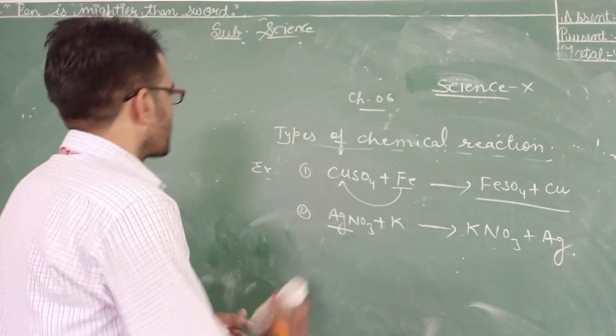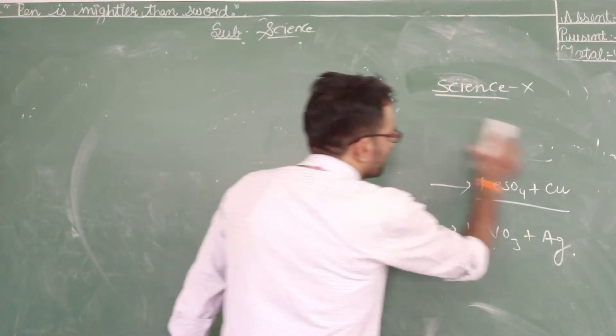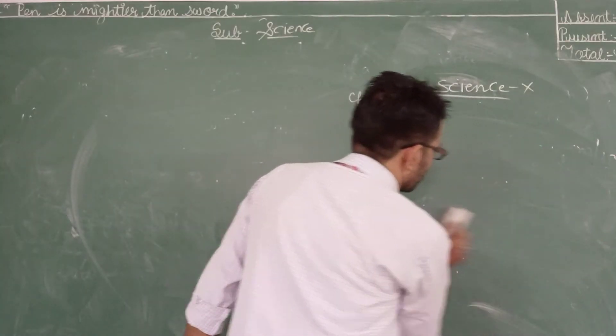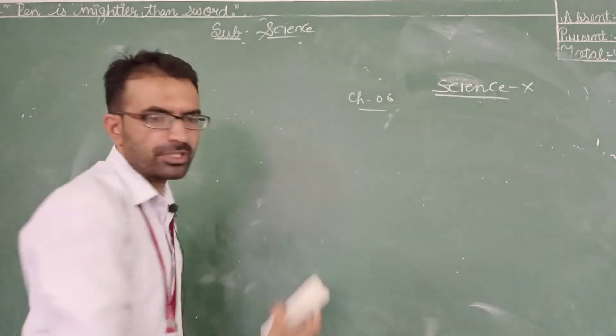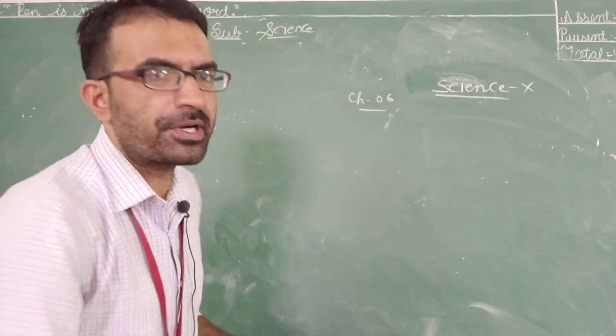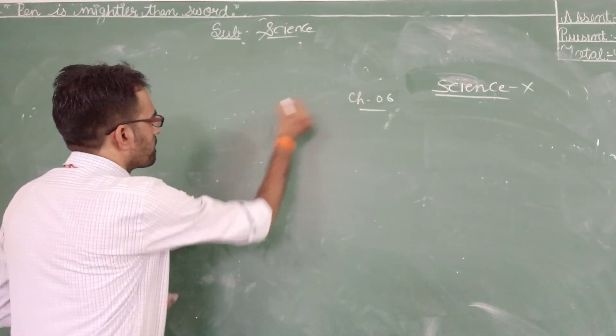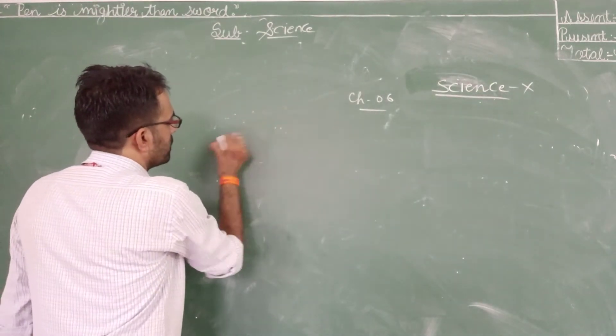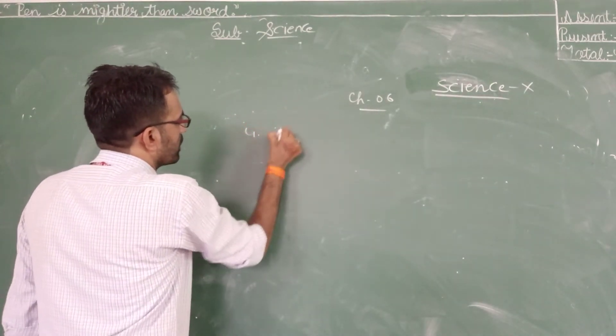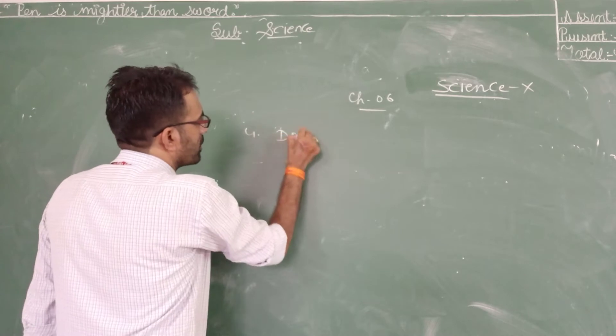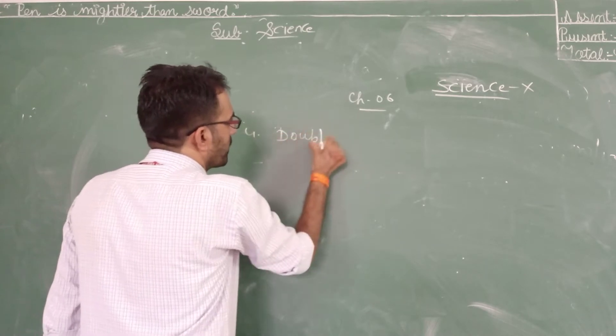Now the next type of chemical reaction is the fourth one: double displacement reactions.